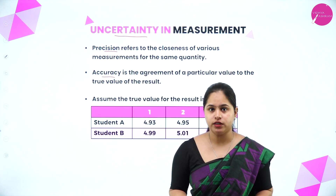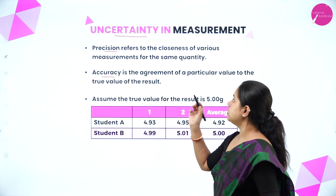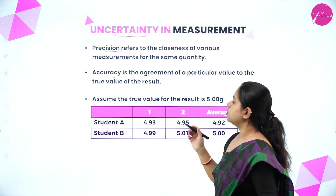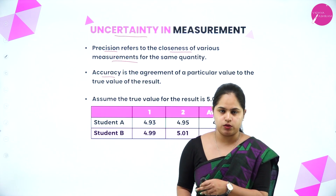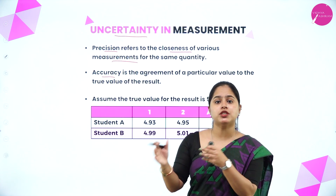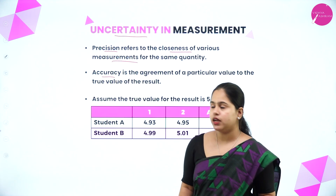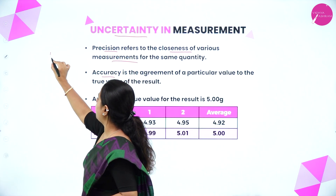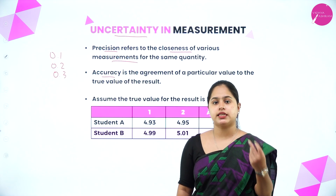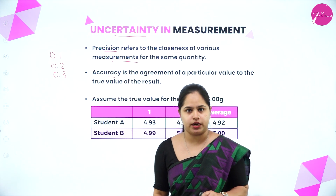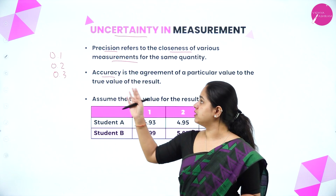You might be using the words precision and accuracy often, but might not be clear on the difference between the two. Precision refers to the closeness of various measurements for the same quantity. As mentioned, you will be taking three or four values for a single measurement. The closeness between these values is called precision. If the values are close enough, we call the measurement precise. For example, if the values obtained are 0.1, 0.2, and 0.3, there is only a very small difference between them — they are very close. So we can say these values are precise.